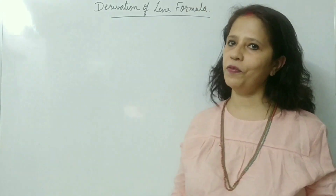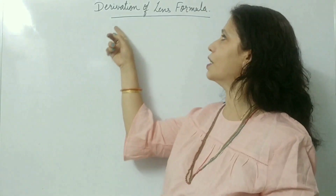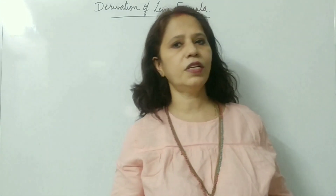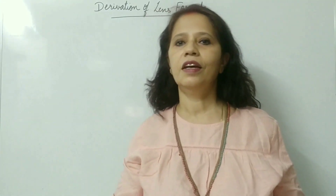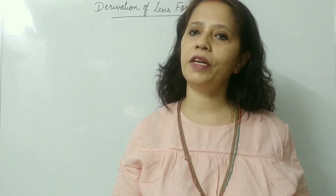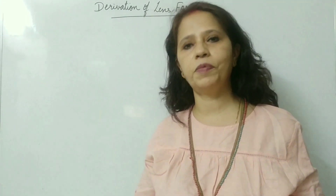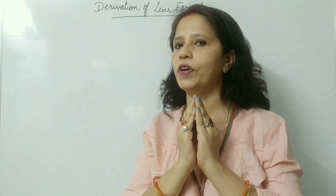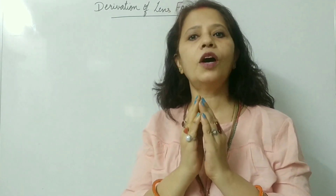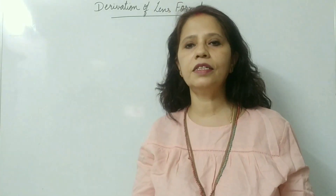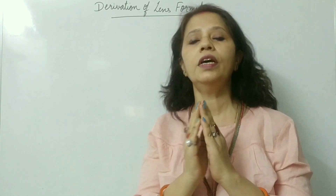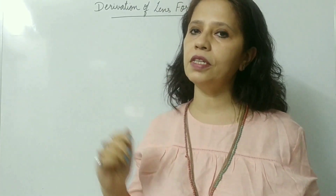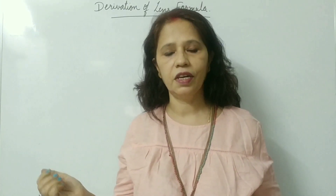Hello viewers, today we are going to discuss about the derivation of lens formula. So what is a lens? A lens is made up of a transparent substance and it is bounded by two spherical surfaces. A thin lens has very thin dimension as compared to the object distance and image distance.